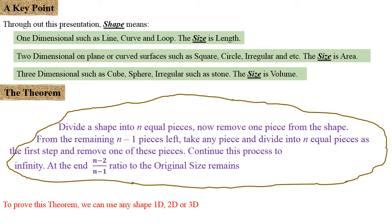At the end, regardless of the nature of the shape, only n minus 2 divided by n minus 1 proportion ratio of the original size remains.